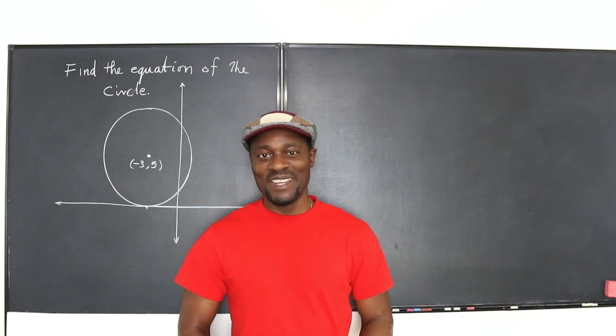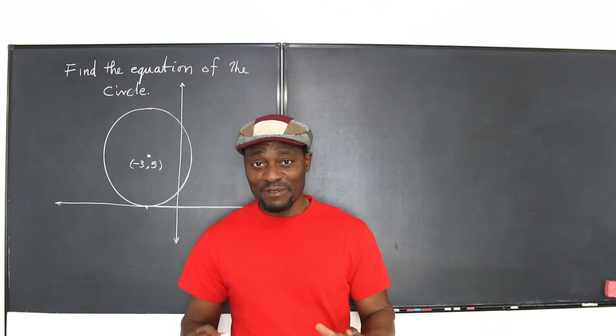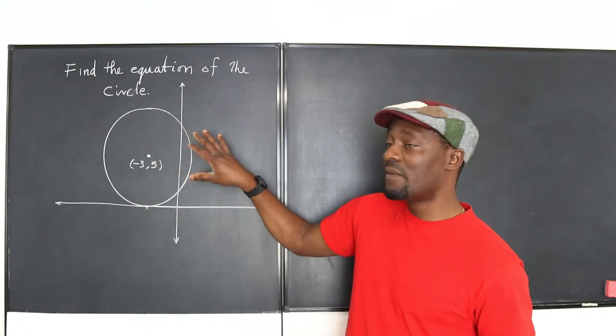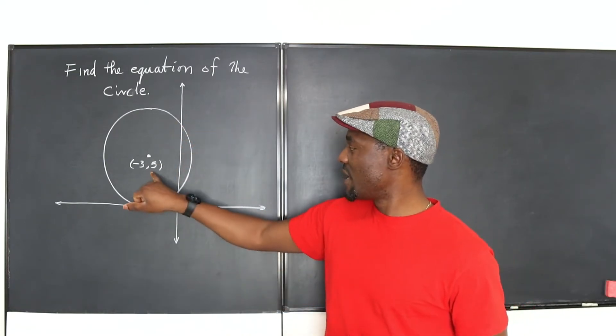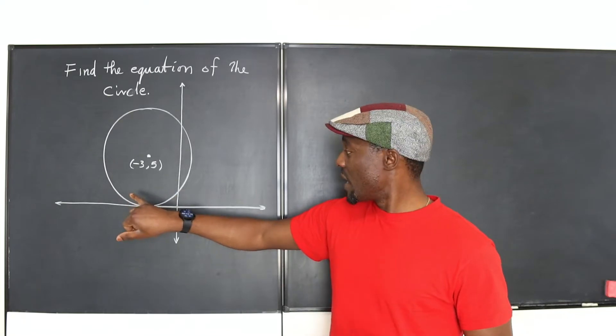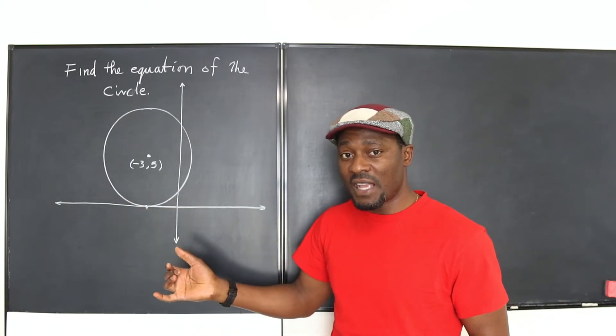Hello, welcome to another video. Now, this is all I have to do. I need to write the equation of the circle, but all I know is that the circle is centered at negative 3, 5 and it's tangent to the x-axis.